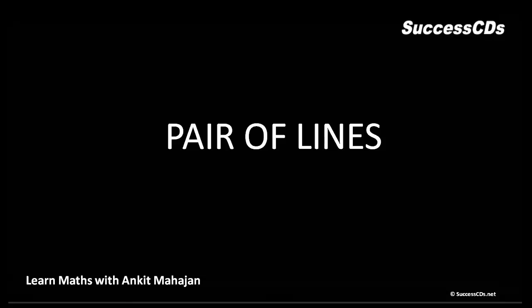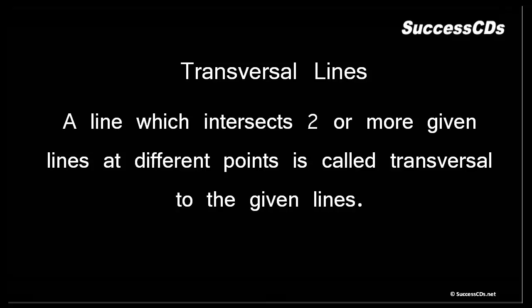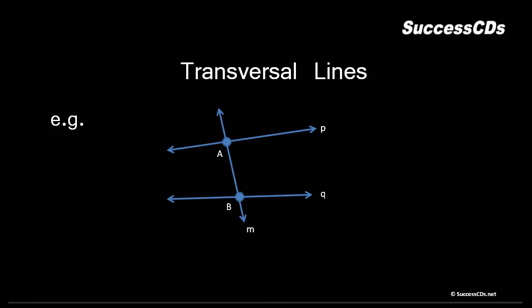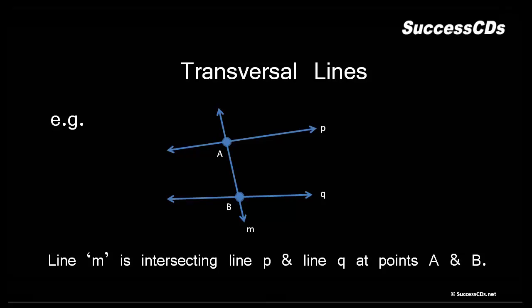Hello everyone, let's today discuss pair of lines and transversal lines. Let's try and understand the basics first. A line which intersects two or more given lines at different points is called a transversal to the given lines. For example, here if we see line M, this line M is intersecting line B and line Q at points A and B respectively.